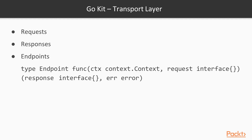The next step of writing a GoKit application is to work with the transport layer. On the transport layer, we will have requests, responses, and endpoints. An endpoint has the following signature, which is a function that takes a context and an empty interface parameter and returns an empty interface and an error. Let's see all of this in the code.